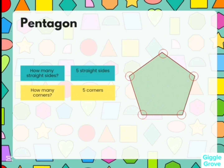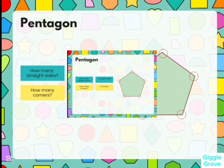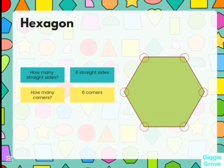Let's discuss the pentagon. How many straight sides do you see? There are five straight sides. And how many corners? There are five corners. Hexagon — how many corners? There are six corners.